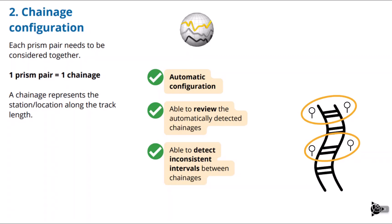T4D Rail knows which prism is on the left side and which is on the right side. It does all of that automatically, which is a huge time saver and less error prone than doing it manually. You are also able to review what has been automatically configured. It can detect inconsistent intervals between chainages — for example, if you're placing prism pairs every five meters and the software detects that the last two chainages are ten meters apart instead of five, it will flag that inconsistency in red.